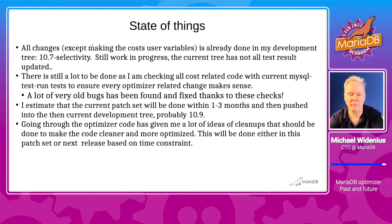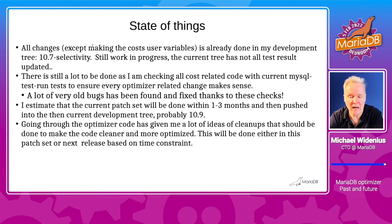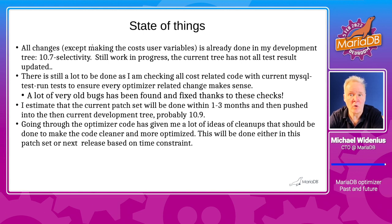The state of things now is that most of what I discussed is already done and is in 10.7. The selectivity tree work is still in progress, and I estimate I have one to three more months to get it to a state I'm totally happy with. I've run through all MTR tests and in almost all cases I'm more happy with the new plans than the old ones. In every case where there's been a notable change, I've been checking the code to understand the change, which has also allowed me to find a lot of edge cases where the old optimizer does something very strange and chooses the wrong plan because of wrong cost calculations.